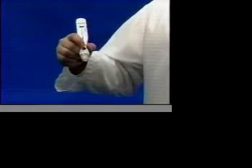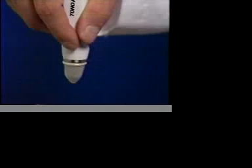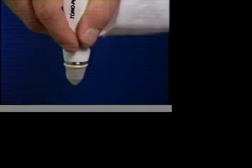Next, hold the TonoPen vertically with the tip down. Press the activation button twice in rapid succession to enter the calibration mode.